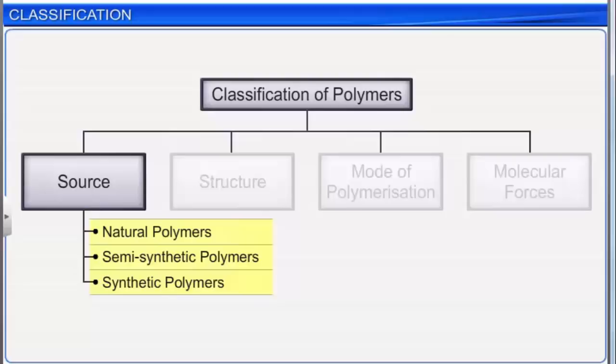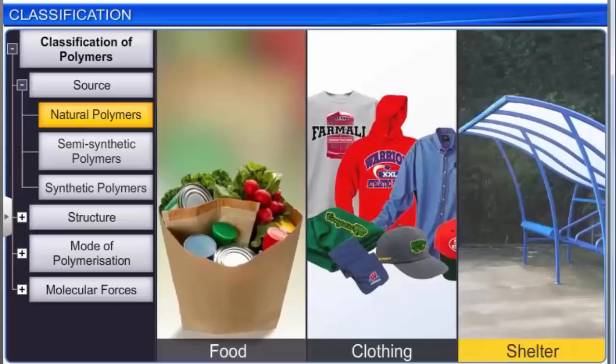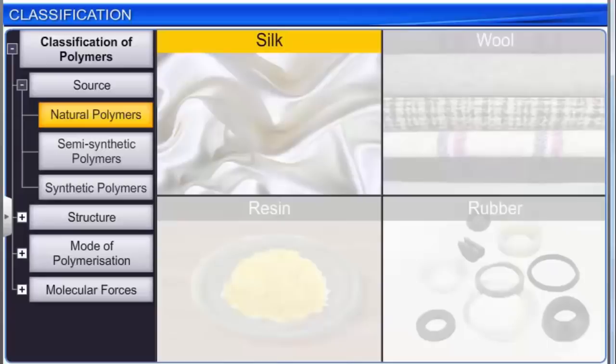Natural polymers are found in plants and animals. They provide much of our food, clothing, and shelter. Examples include proteins, cellulose, starch, silk, wool, resin, and rubber.